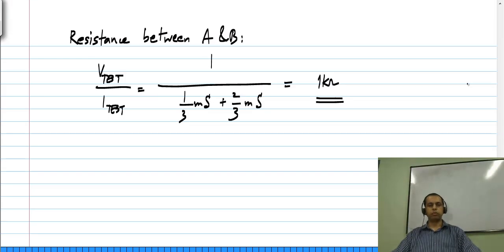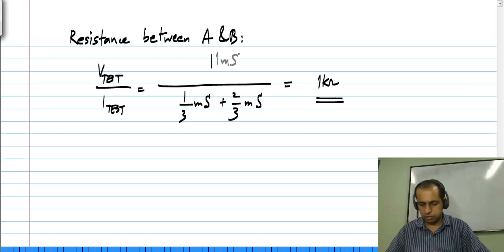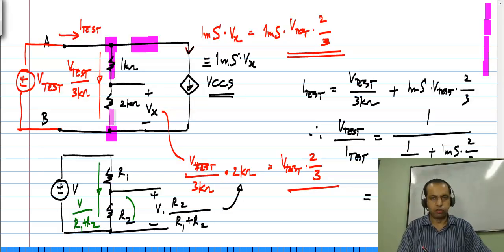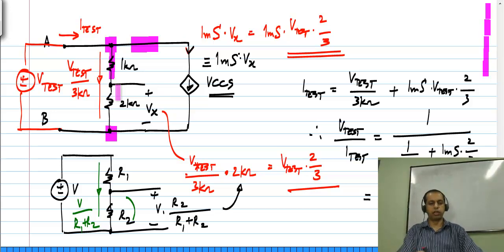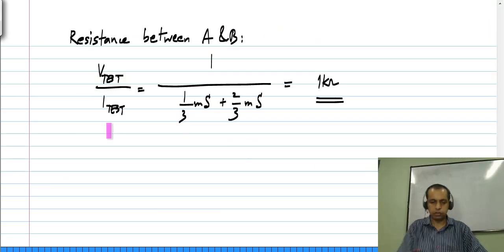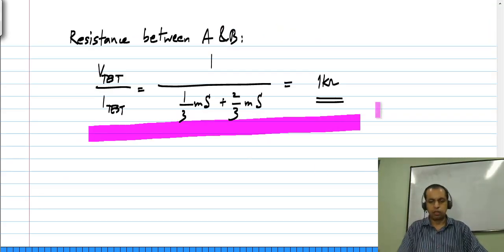You could be asked a number of other questions. For instance, you could be asked the current flowing through this branch or this branch, or the circuit could be a little more complicated and you could be asked for currents and voltages elsewhere in the circuit. But once you are able to apply the voltage source and carry out these calculations, you should be able to find any of those quantities. In this particular example, the effective resistance turns out to be 1 kilo ohm.